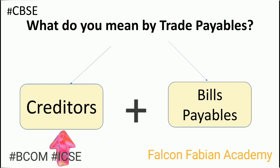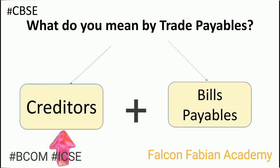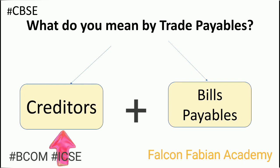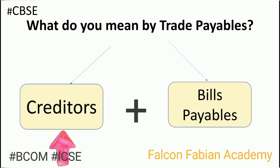One thing you need to note is that the meaning of the term 'creditor' in accounting is slightly different from the meaning in English. In accounting, we will use the word creditor only for the vendor from whom we buy goods on credit. For example, if I needed a piece of furniture for my office and bought it on credit for my business, I will not be using the term creditor for that person. In accounting, the word creditor is restricted to a person from whom we buy raw material, inventory, or goods on credit.